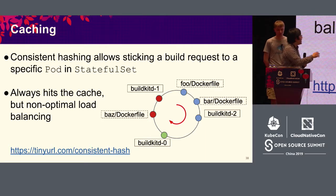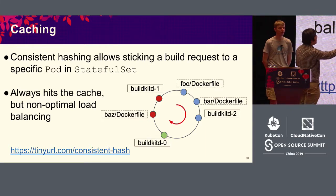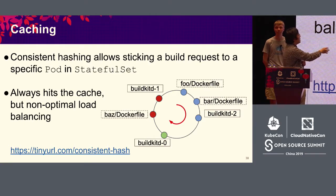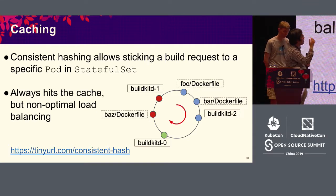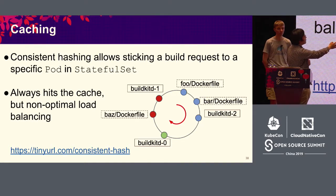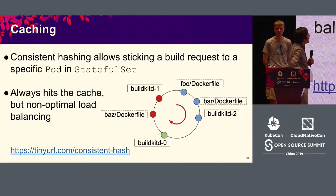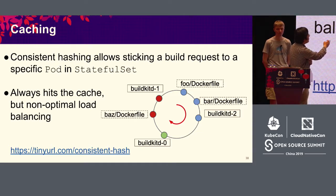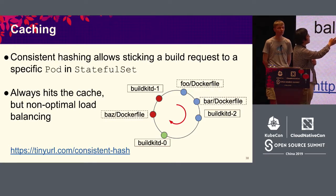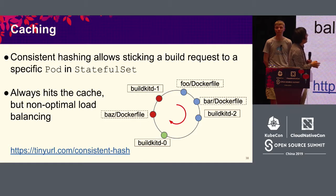Remote cache from the registry is slow compared to daemon local cache. For example, it takes 2 minutes and 50 seconds without cache, 36 seconds with registry cache, but only 0.5 seconds with daemon local cache — more than 70 times faster than remote cache. So if you want to make use of daemon local cache, you should consider using consistent hashing to stick build requests to a specific pod in the StatefulSet, so you can always hit the daemon local cache. Using a circular hashing space, you assign Dockerfiles to specific BuildKit pods, so even if you modify the Dockerfile or add/remove nodes in the cluster, you can almost always hit cache in the BuildKit daemon pod.